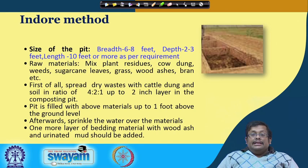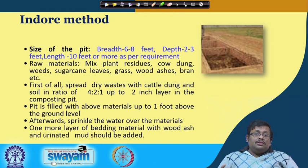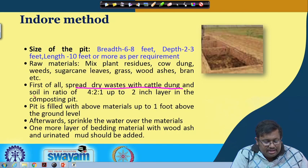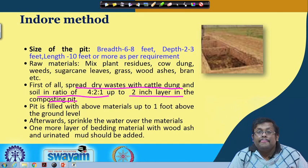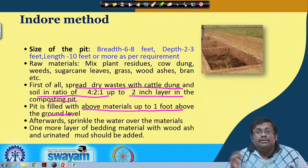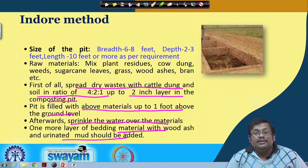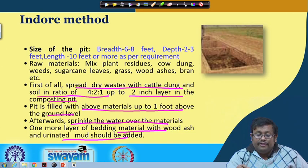To create the Indore compost: first, dry leaves with cattle dung and soil in the ratio of 4:2:1 are spread up to a 2-inch layer in the composting pit. The pit is filled with these materials up to 1 foot above the ground level. After reaching 1 foot above the ground level, water is sprinkled over the materials and one more layer of bedding materials with wood ash and urinated mud is added.